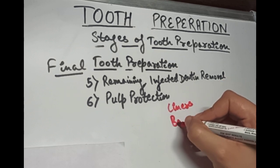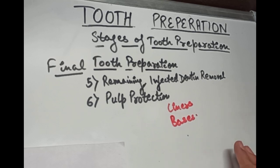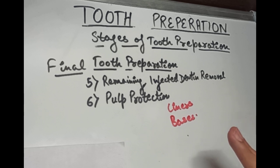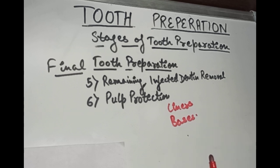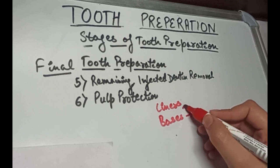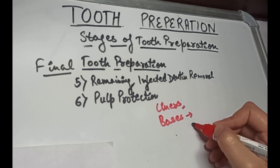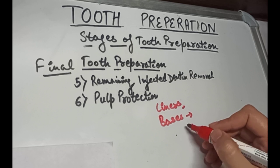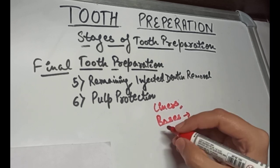Bases are cements used in a thicker dimension beneath permanent restorations to provide mechanical, chemical, and thermal protection for the pulp. Examples of bases are zinc phosphate, zinc polycarboxylate, and resin modified glass ionomer, which is most common. Bases are used under metal restorations, under liners to prevent their dissolution over time, for thermal protection, and to distribute local stress across the underlying dentine.